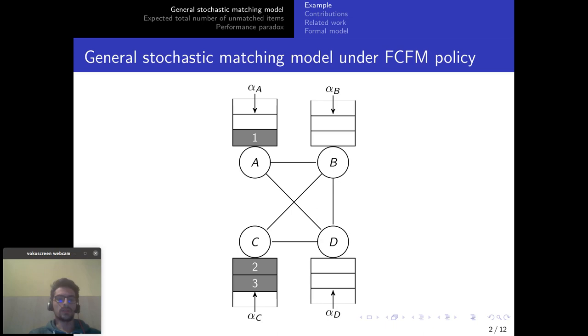So here is an example of such a model with a graph with four nodes A, B, C and D and the items that are already in the system, one at the QA and two at the QC.